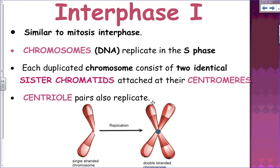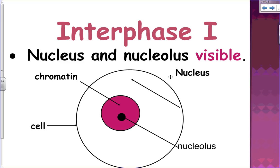Looking at the phases of meiosis, we start with interphase one, which is similar to interphase in mitosis. During interphase of meiosis, chromosomes replicate in the S phase. We now have duplicated chromosomes consisting of two identical sister chromatids attached at the centromeres. The centriole pairs also replicate. DNA replication produces those sister chromatids.